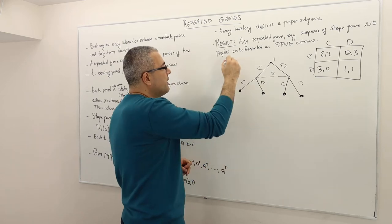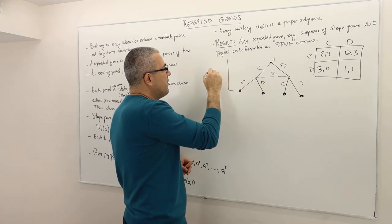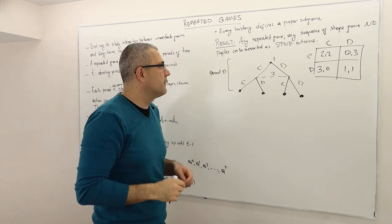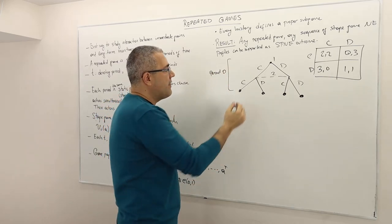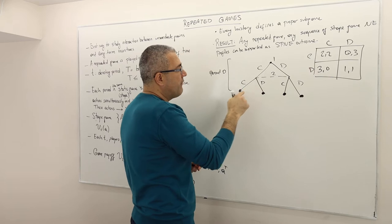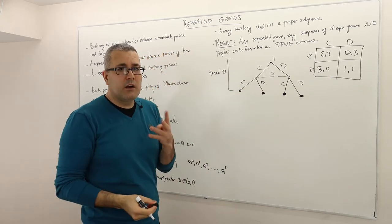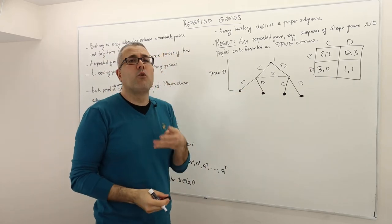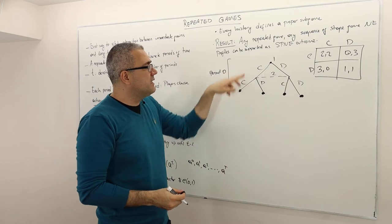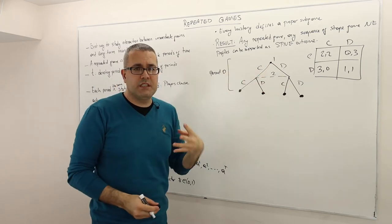This is basically what happens in period zero, the first period. Once the first period is over, everybody observes, and there are clearly four possible histories: CC, CD, DC, or DD.